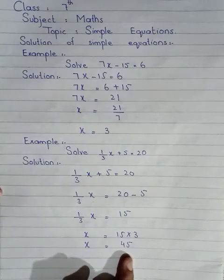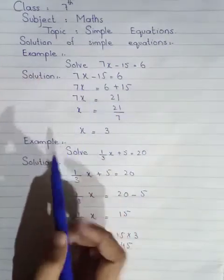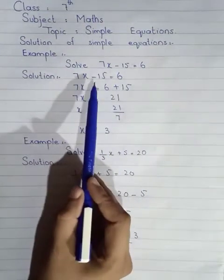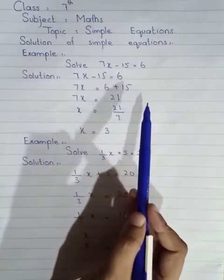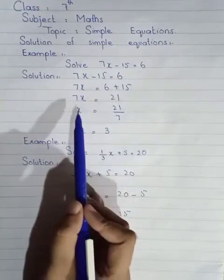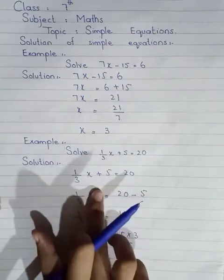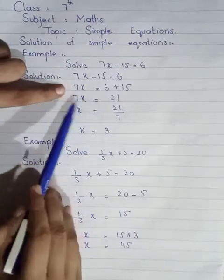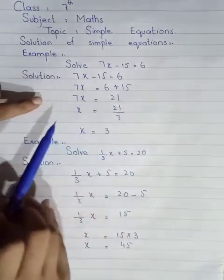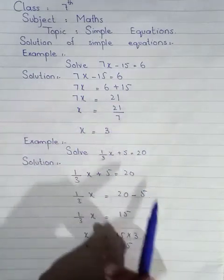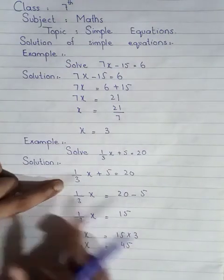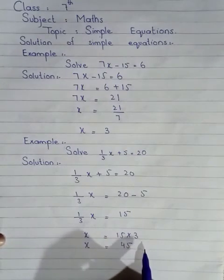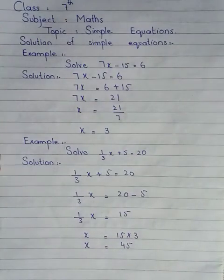In this way, you all have to solve these examples. We have to find out the value of x — we have to separate x. Whatever terms are with x, we take them to the other side. For example, here 15 was minus, when we took it to the other side it became plus — the opposite sign. Similarly, 5 was plus here, when we take x to the other side it will become minus — it goes to the other side with the opposite sign. Likewise, 7 was multiplying here — when we take it to the other side to separate x, what was multiplying there will become dividing here. And 3 was dividing on the left side — when we take x to the right side, it will become multiply. In this way, you all have to solve these questions and examples.